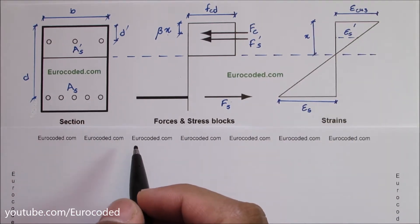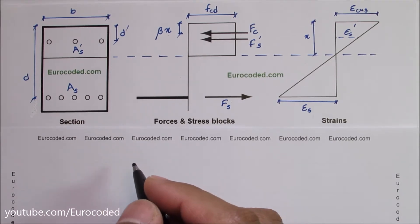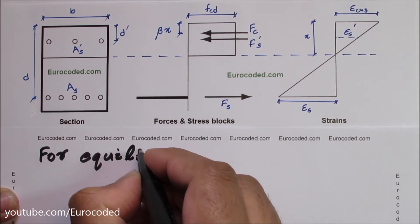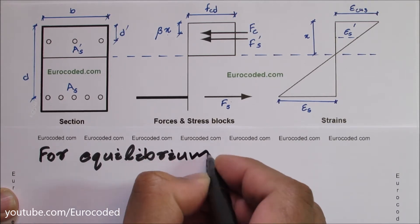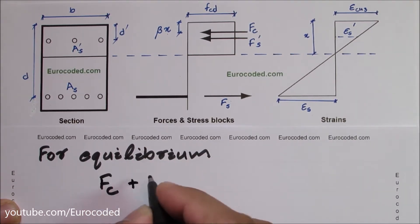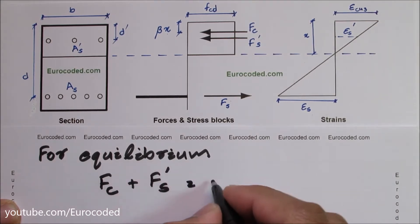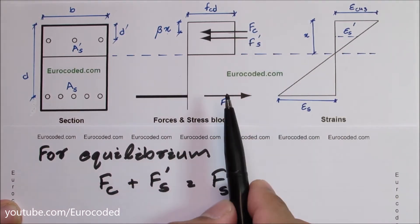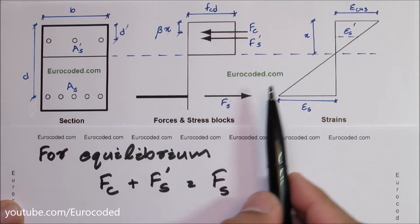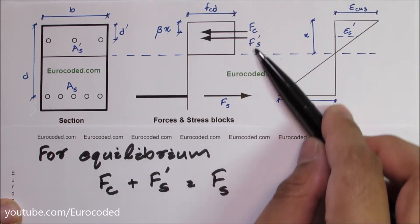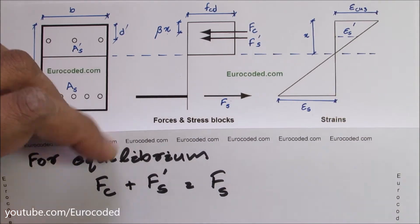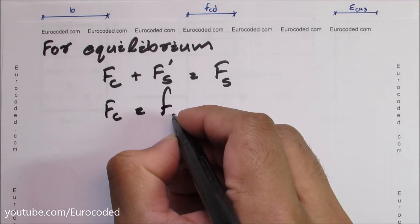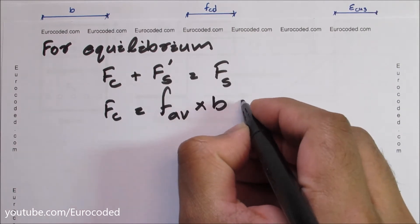If all reinforcement yields, then for equilibrium we can write FC plus F'S is equal to FS. FC is the concrete compression force, F'S is the compression steel force, and FS is the tensile steel force. We can write FC is equal to FAV times B times X.